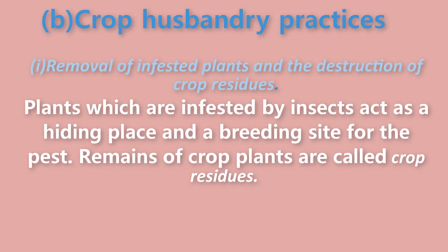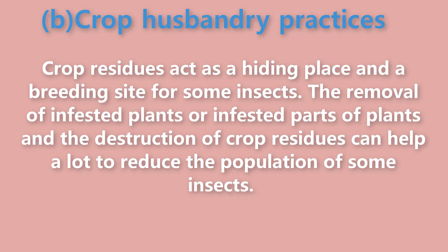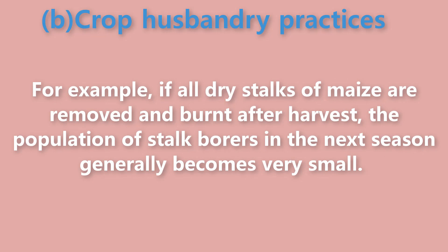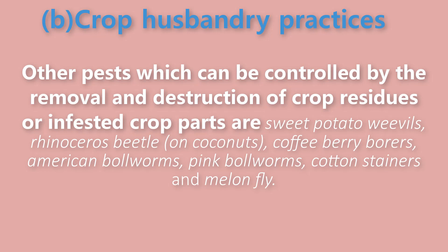Also: 7) close spacing, and 8) destroying alternate host plants. Removal of infested plants and the destruction of crop residues: Plants which are infested by insects act as a hiding place and a breeding site for the pest. Crop residues also act as a hiding place and a breeding site for some insects. The removal of infested plants or infested parts, and the destruction of crop residues, can help greatly to reduce the population of some insects. For example, if all dry stalks of maize are removed and burnt after harvest, the population of stalk borers in the next season generally becomes very small.